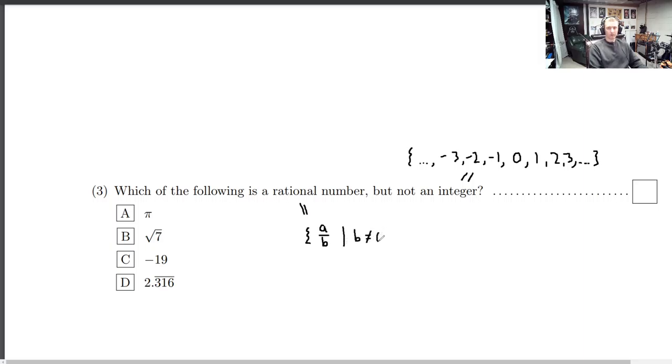A rational number is any number that can be written like this. It's a over b, where b is not 0. Okay? But a and b are both integers. So a and b are in the integers. Okay? So you just take any two of these numbers, and you take a fraction of them, a ratio of them. And that gives you the rational numbers. So the ratio of any two integers, so long as the bottom number you choose is not 0. So which of these is a rational number? It's a ratio of integers, but it's not an integer.